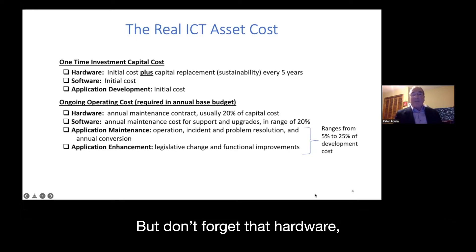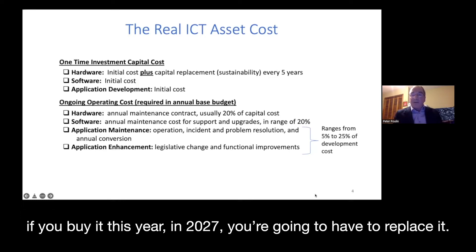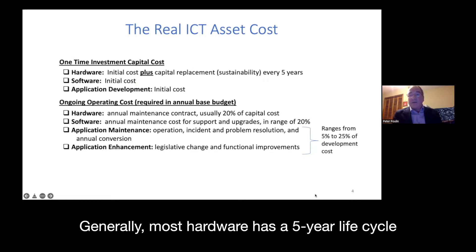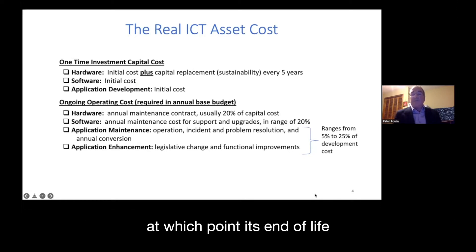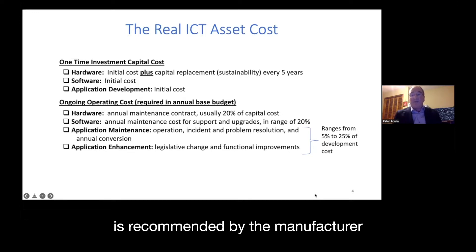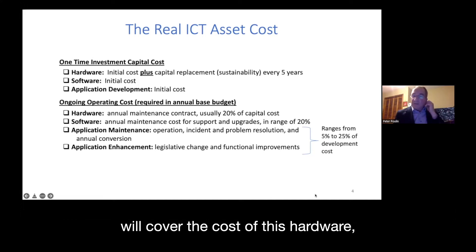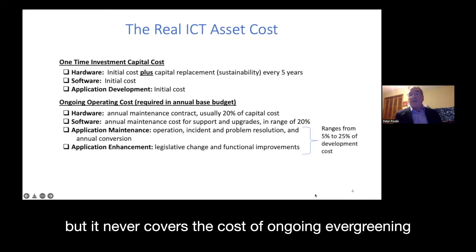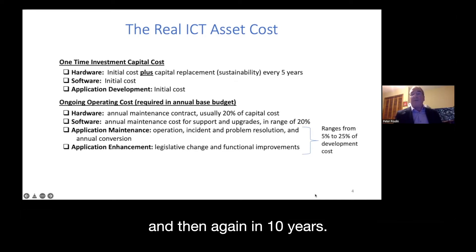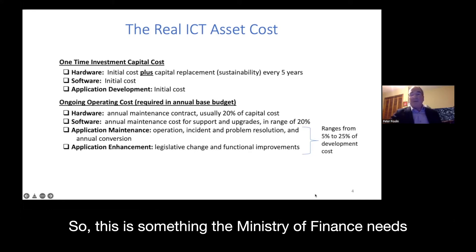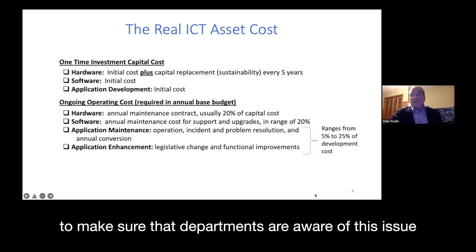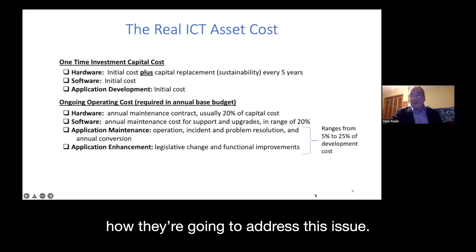Don't forget that hardware purchased today will need to be replaced. Most hardware has a five-year life cycle, at which point it's at end of life as recommended by the manufacturer and needs to be replaced. A Ministry of Finance submission will cover the cost of the initial hardware, but it never covers the cost of ongoing evergreening — replacing it in five years, then again in ten. Ministries of Finance need to make sure departments are aware of this issue and have plans to address it.